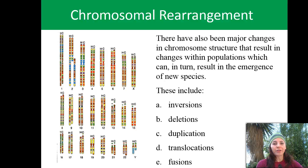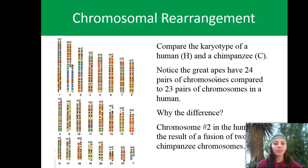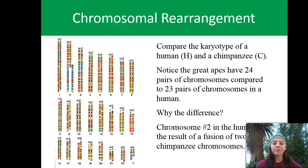Chromosomal rearrangement involves major changes in chromosome structure that can result in changes within populations and even the emergence of new species. These include inversions, deletions, duplication, translocation, and fusion. Comparing the karyotype of a human and a chimpanzee, great apes have 24 pairs of chromosomes while humans only have 23. This is because chromosome number two in the human is actually the result of the fusion of two chimpanzee chromosomes — a direct example of a new species emerging from chromosomal fusion.